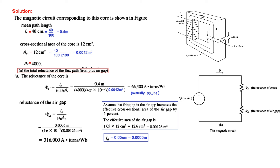A point to note: the major reluctance is due to this air gap, which has a very high value compared to the reluctance of the core — it is almost 5 times the core reluctance. That is why it is said that the air gap dominates the behavior of the circuit.